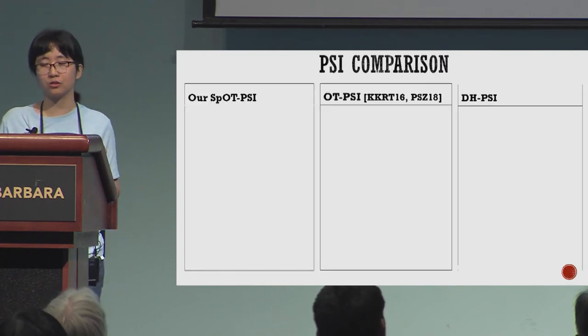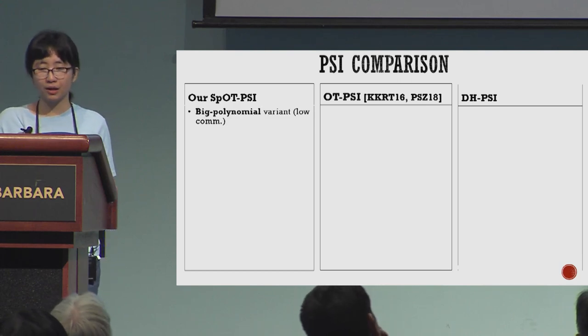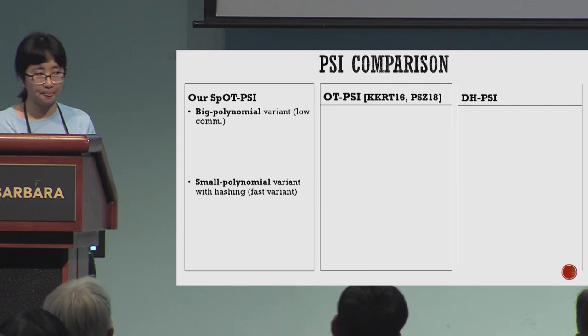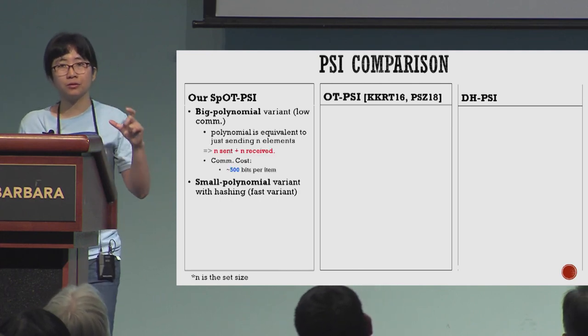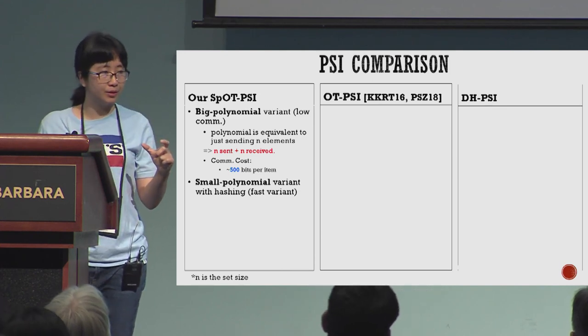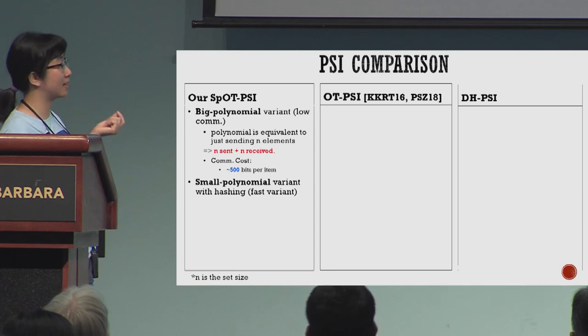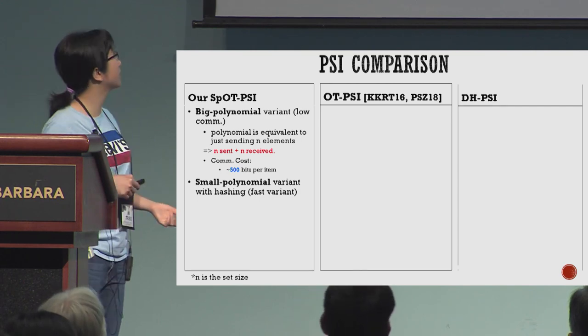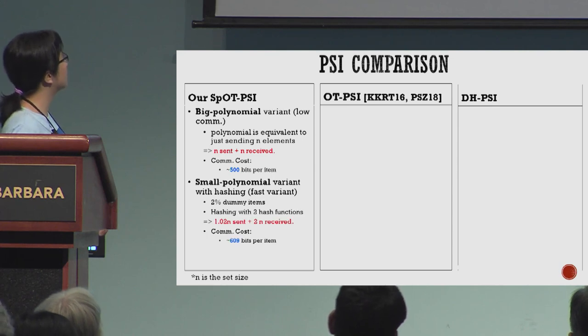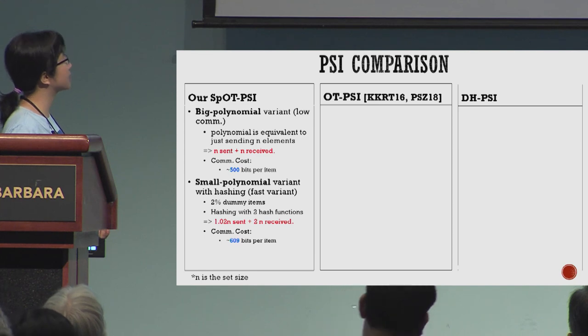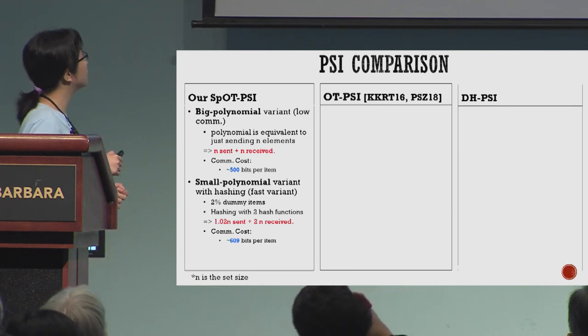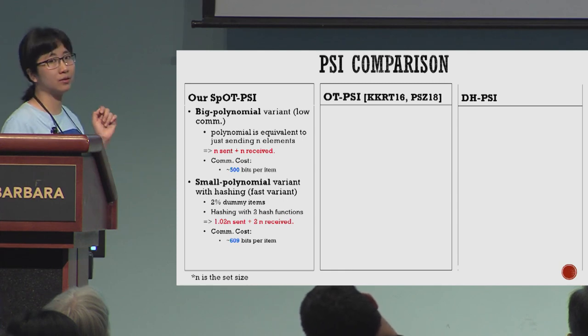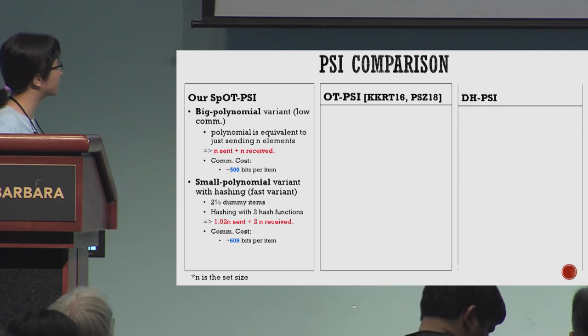For the comparison, we have two protocol variants. The first one has a big polynomial and the second one has small polynomials with the hashing scheme. For the first one, we send the big polynomial which is equivalent to sending n values, so we have n values to send and n values to receive, so the communication cost is about 500 bits per item. For the second variant, because we use the hashing scheme, there's 2% dummy items and we use two hash functions, so we have 1.02n sent and 2n received, and the communication cost is about 600 bits per item.